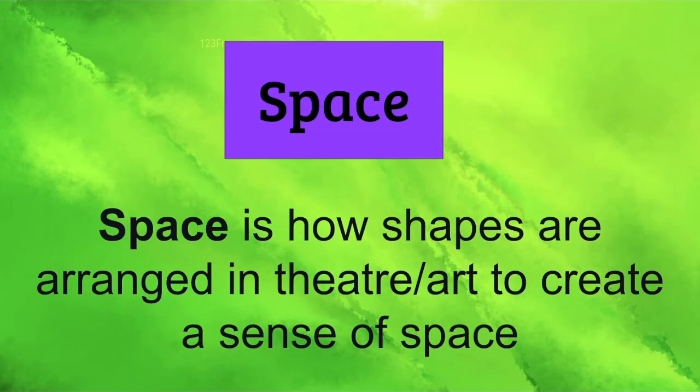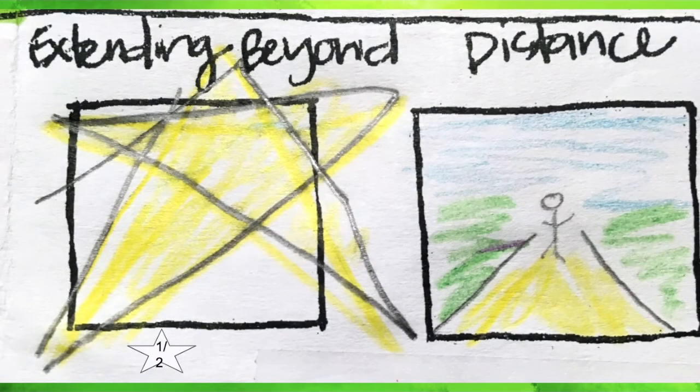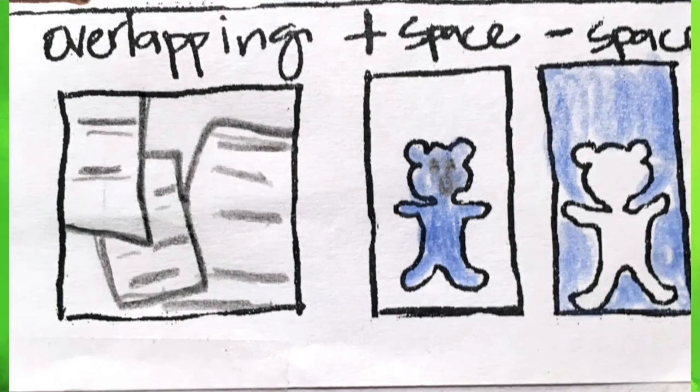Next is space. Space is how shapes are arranged in theater or art to create a sense of space. So you can use space like, for example, if you wanted to fill up the space, you make it big. You can make things bigger than life. How you arrange things. Is it extending out past the normal boundaries? You can use space to show distance. You can overlap things to show space. You can use the positive space and the negative space of something.